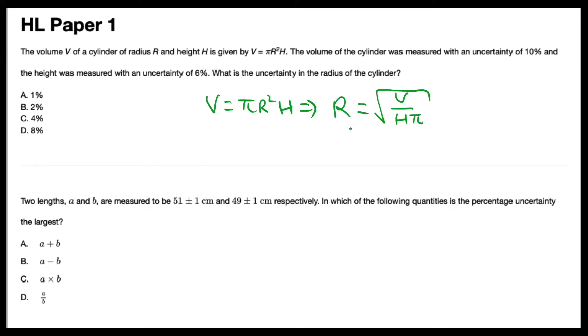And now we can calculate the percentage uncertainty. So volume has an uncertainty of 10%, height has an uncertainty of 6%, and because we have a square root, we need to multiply by a half. So this will give you an answer of 8%, which is D. So remember, always add up percentage uncertainties.